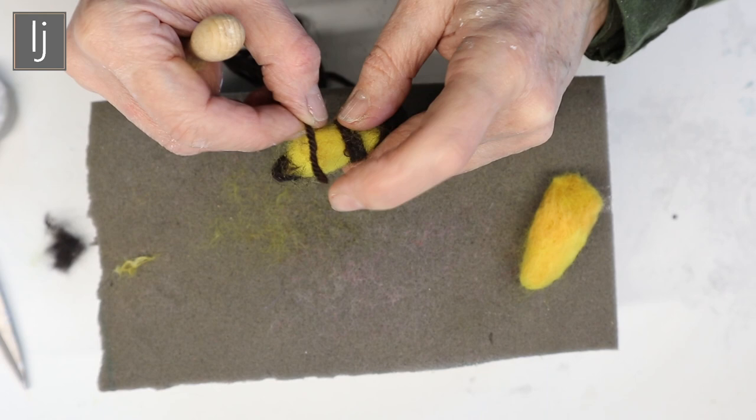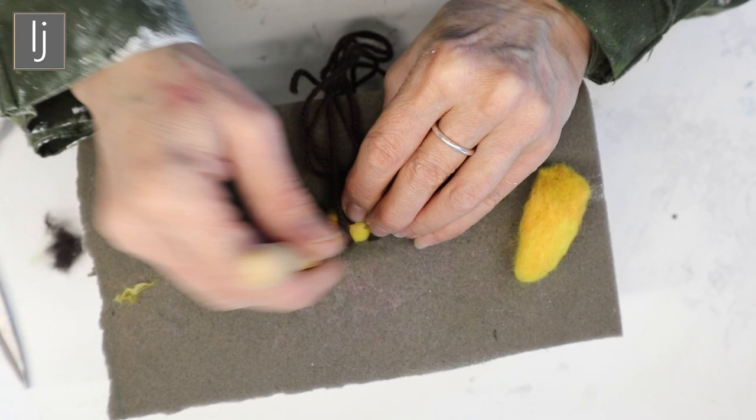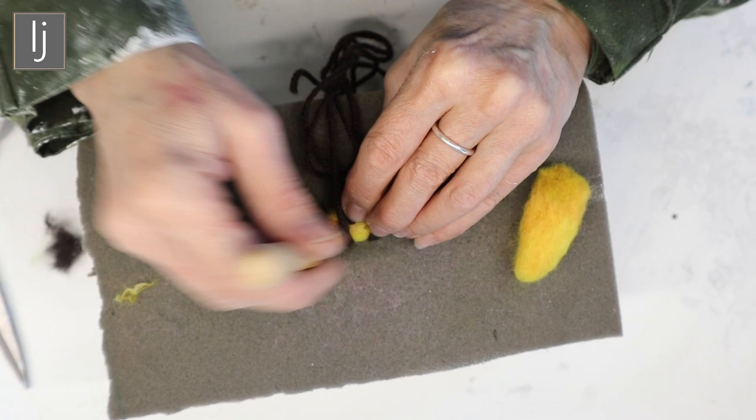There's the underside. Wrap it round once, twice. Fix it down because it's easier to do at this point, and then cut the end off. You've got two little stripes on your bee. Just finish off the dry felting. You've got a lovely little bee. The rest is going to be done with the embroidery.